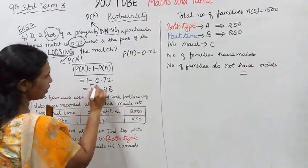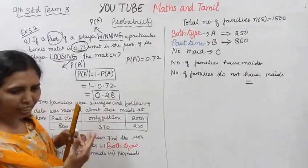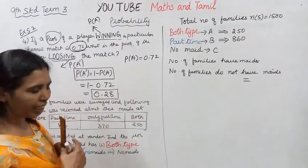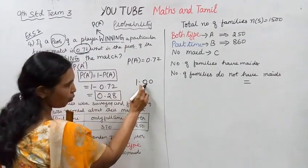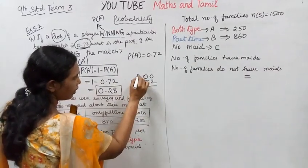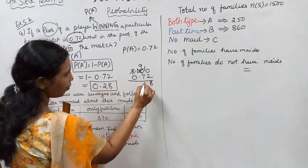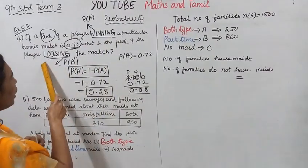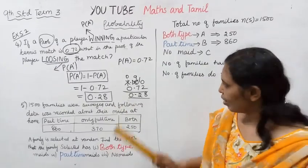P of A dash equals one minus 0.7, which gives 0.28. The answer is 0.28. For the decimal subtraction: 1.00 minus 0.72 — working in decimal, the answer comes to 0.28. Therefore the probability of the player losing the match is 0.28.